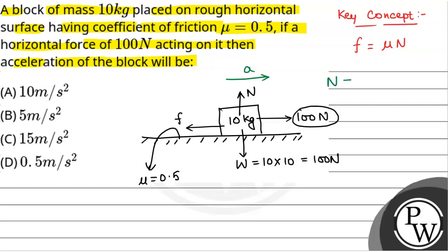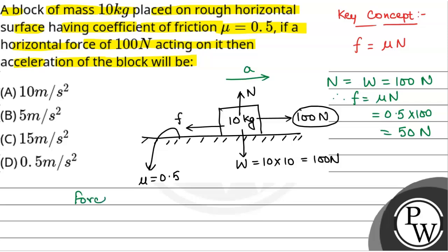Balancing forces in the vertical direction, normal reaction is equal to weight, that is equal to 100 N. Therefore, frictional force will be equal to mu into N, that is equal to 0.5 into 100, which is equal to 50 N.